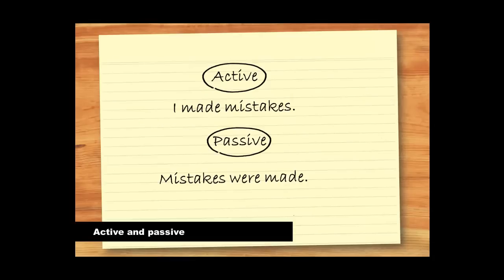We use the passive voice to focus on the person or thing doing the action. So if President Reagan wanted to focus on himself, he would have said I made mistakes. But he used the passive instead to focus on the recipient of the action, the mistakes. Therefore, Reagan cleverly avoided taking responsibility for what happened.